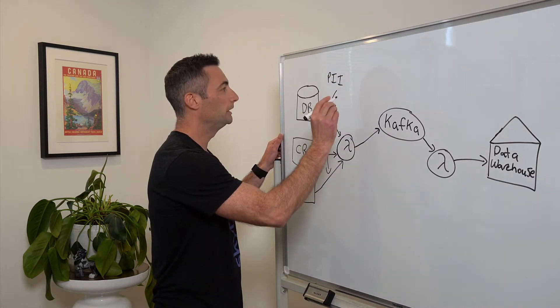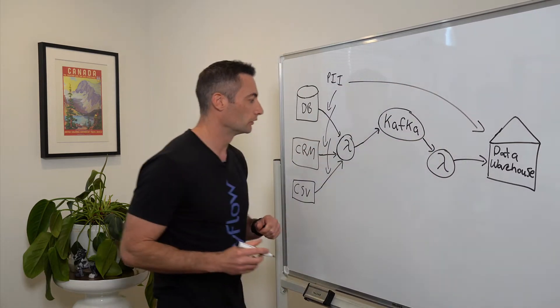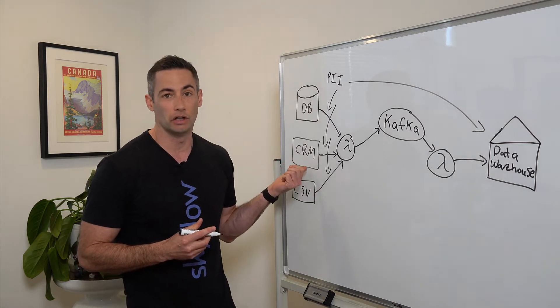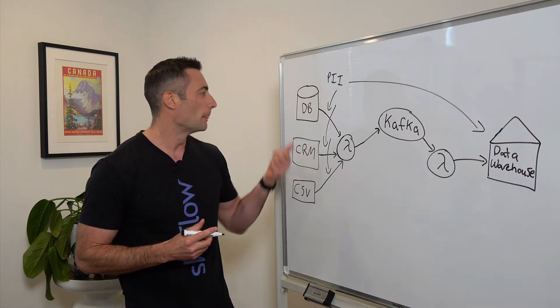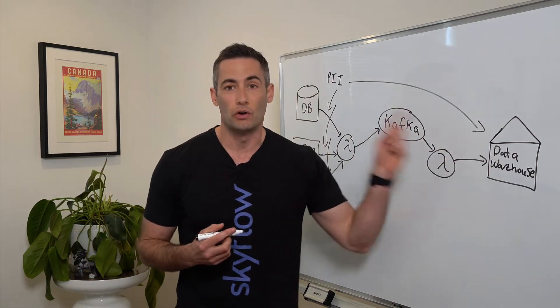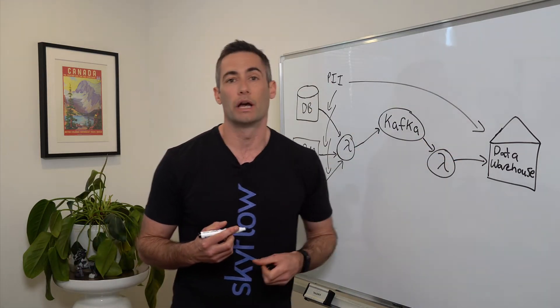And this PII is being copied down into our data warehouse. We probably have multiple copies of the same information. We probably have an email in our CRM, and we probably also have their email in the database. So those emails, those phone numbers, those names, and so forth are being put down into our data warehouse.